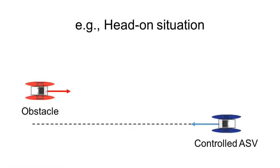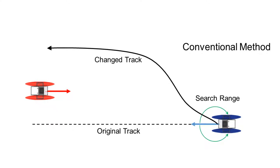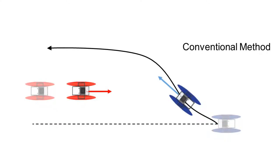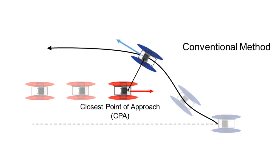For example, in a head-on situation, conventional collision-based methods mandate the robot to turn to the right to meet the safety distance requirement no matter the obstacle velocity.